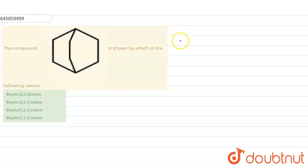What will be the name? Let's write down the compound. The compound is bicyclic. This is the bicyclic compound. Let's do the naming.